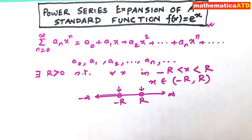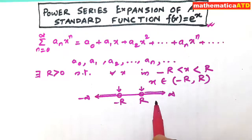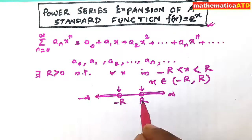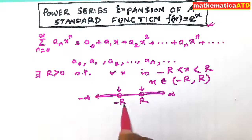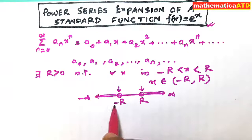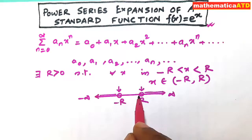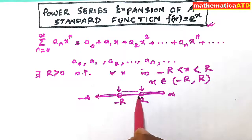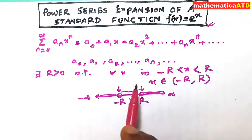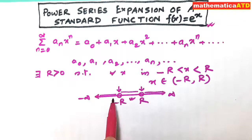Outside this interval, the series diverges — from negative infinity to -r, and from +r to positive infinity, the series diverges. We call the interval (-r, +r) the interval of convergence or range of validity, and r is called the radius of convergence. Some power series converge for every real value of x, in which case we say r = infinity.